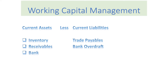Current assets is made up of inventory, receivables, and cash at bank. Current liabilities is made up of trade payables and bank overdraft. If you think about it, the bank balance or the bank overdraft is merely a balancing figure based on how you manage your inventory, receivables, and trade payables.